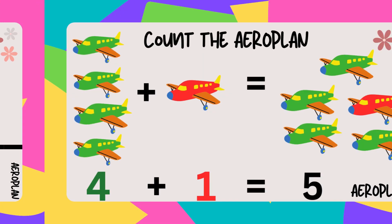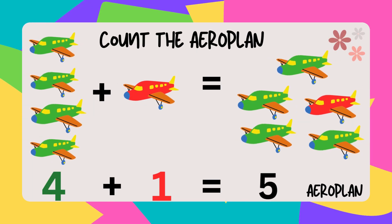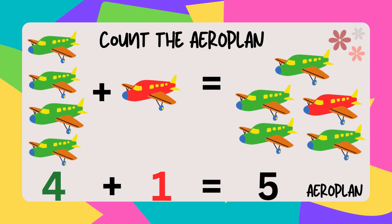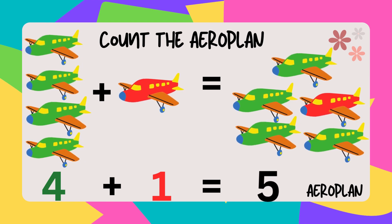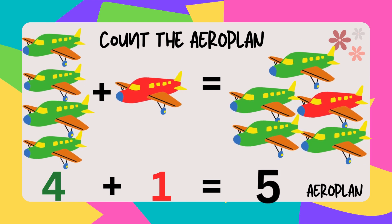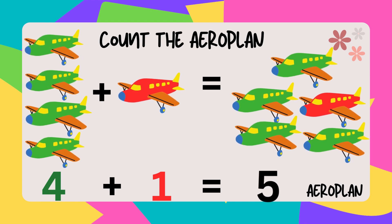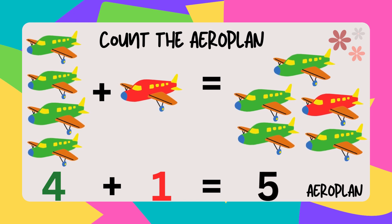Four green aeroplanes plus one red aeroplane. The sum of aeroplanes is five.